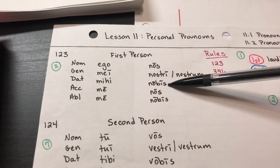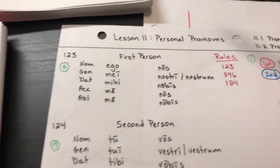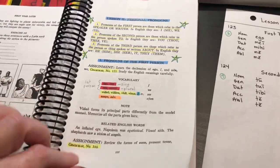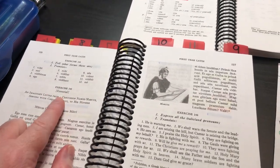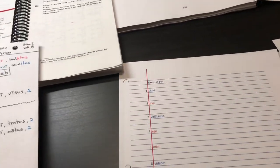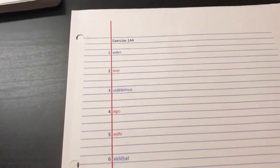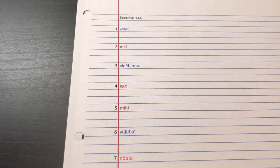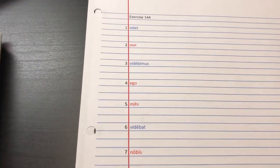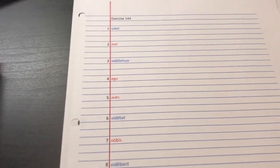We then moved to exercise 144. I typed it up and made a sheet for everybody listing all the words from the exercise. We took a minute to look at them — students noticed pronouns and verbs. The blue ones are the verbs and the red ones are the pronouns. We read the directions: tell what form these are, then translate. I wanted them to have a good understanding of what 'tell what form' means.